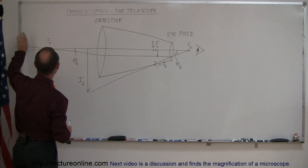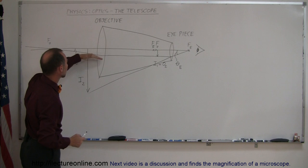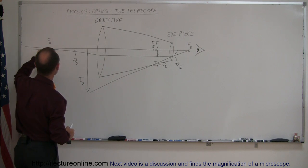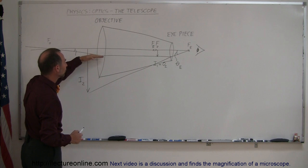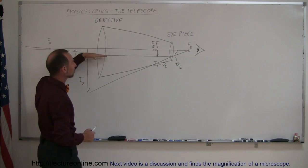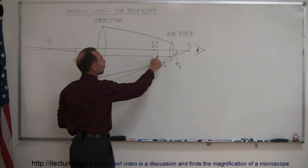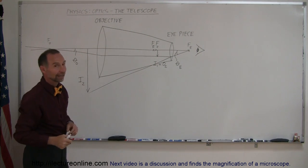Rays come in from an object far, far away. They go through various portions of the lens, but the one we're interested in is the one that goes to the focal point on this side of the lens, hits the lens, refracts, then continues on parallel to the optical axis and forms an image right there — called image one — from the objective.